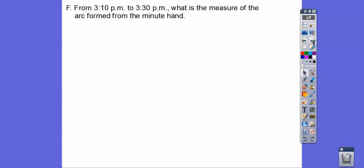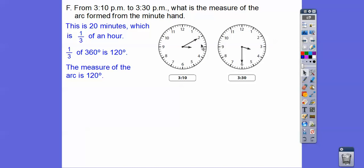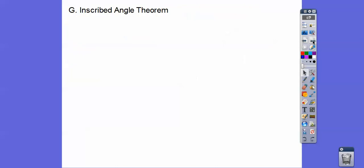From 3:10 to 3:30, what is the measure of the arc formed by the minute hand? So if I went from here all the way around to there, that would be 360 degrees. Well, there's 12 equal pieces in here. If we took 360 and divided it by 12, that means this little piece is 30 degrees. Every five minutes, it's 30 degrees. So we can do 30 times 4, which is 120, or we can realize that this is one-third of a circle. So one-third of 360 is also 120.